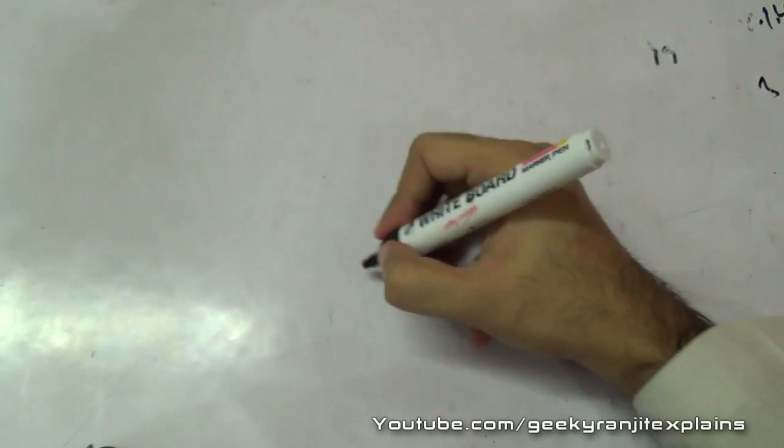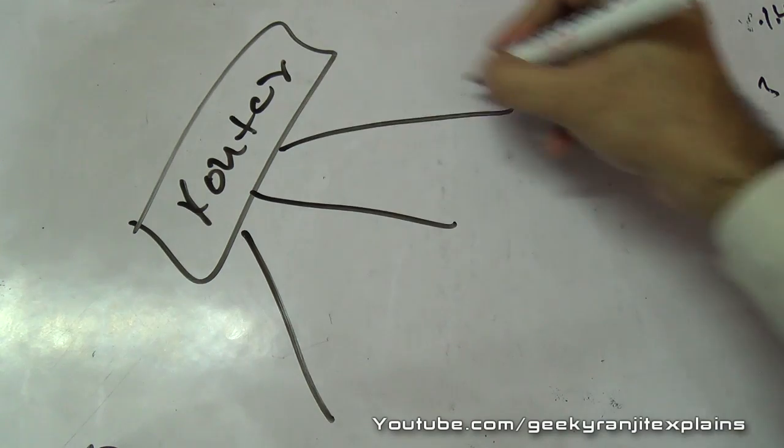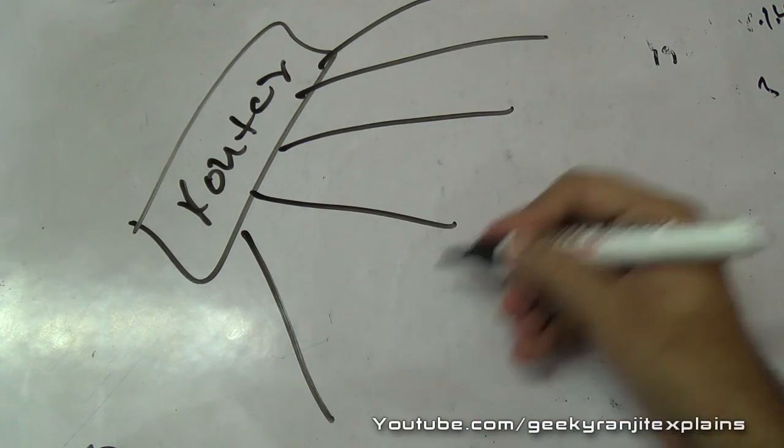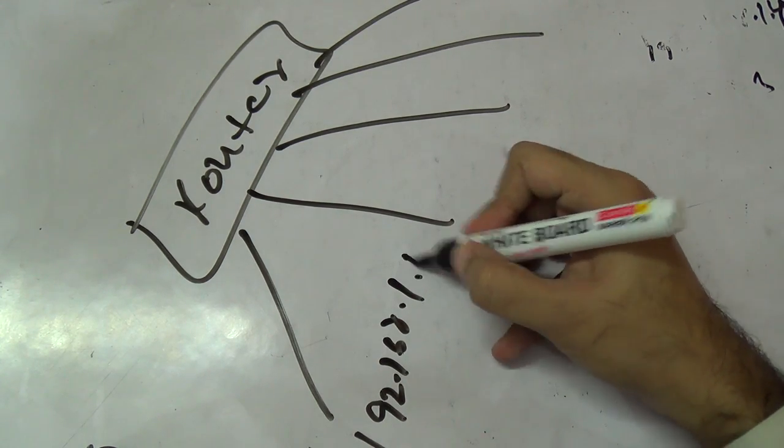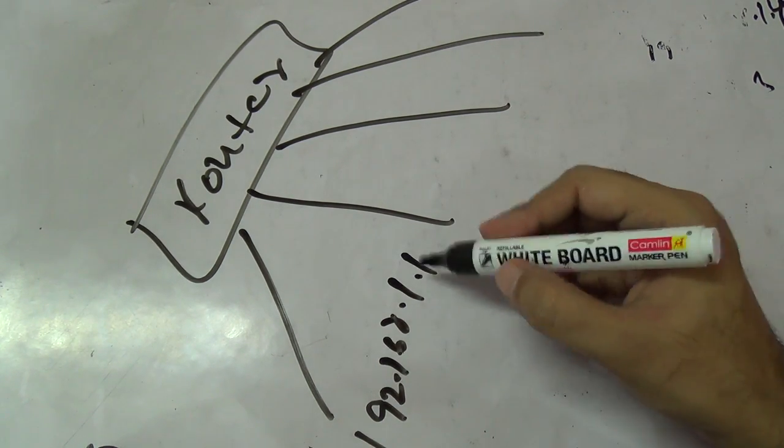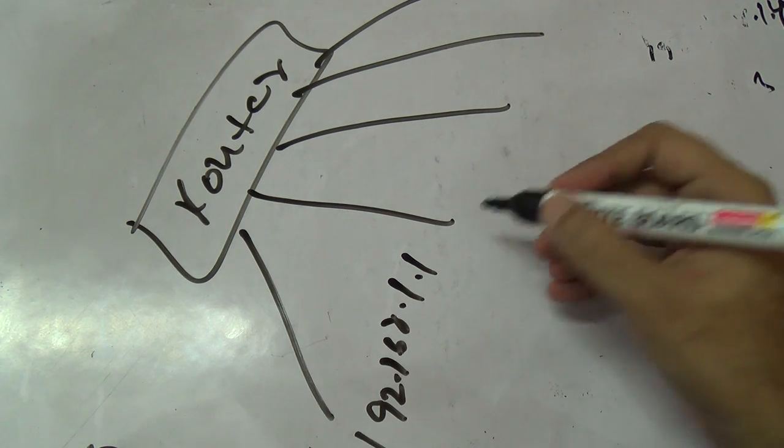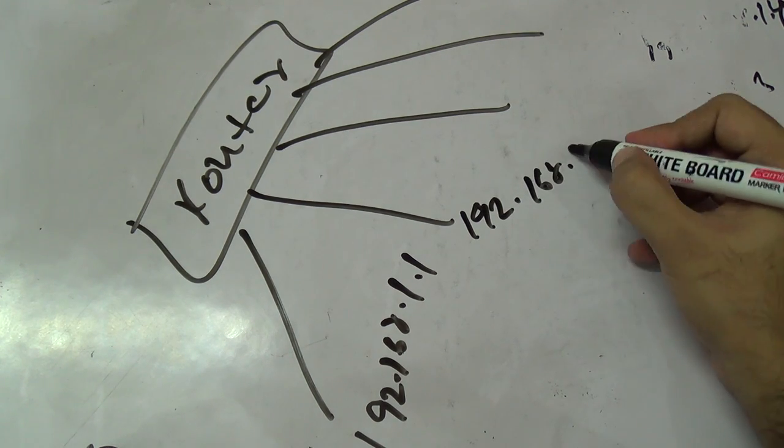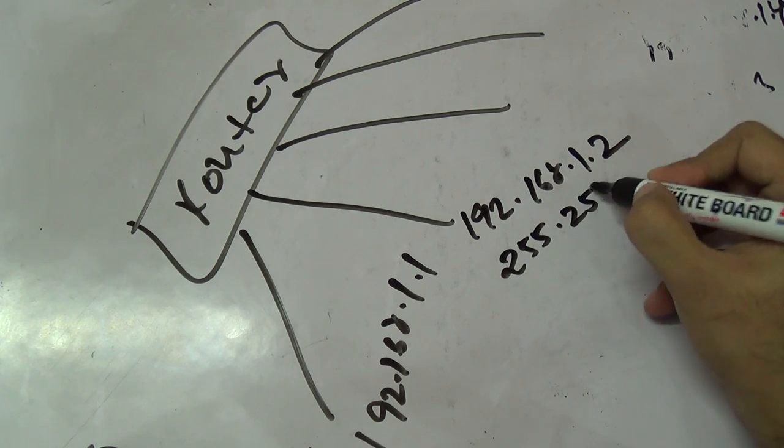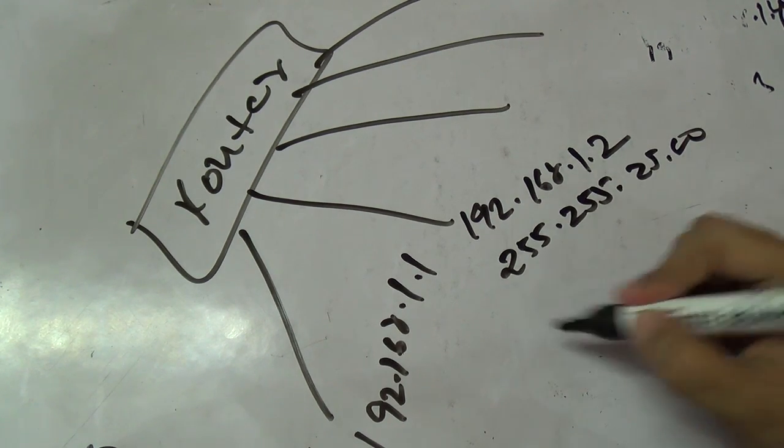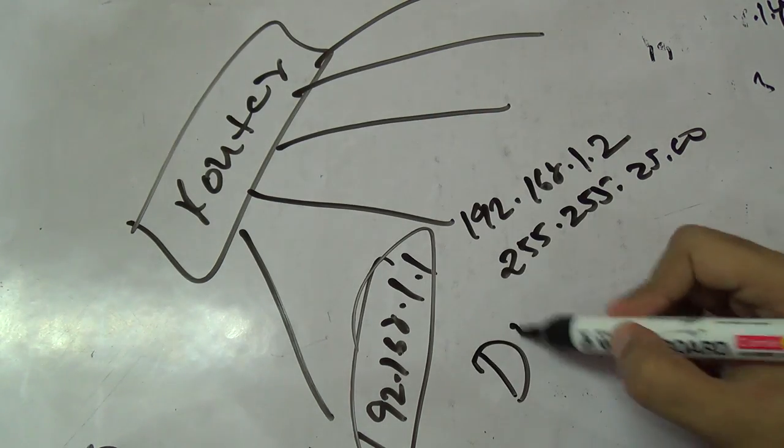If you noticed, we had our router here with multiple devices connected, and all of them were getting IP addresses assigned automatically. You don't have to open your computer IP settings and enter these IP addresses every time. The subnet mask and all those details required to access the internet are automatically added - this is done by the DHCP server, which also runs on your router.